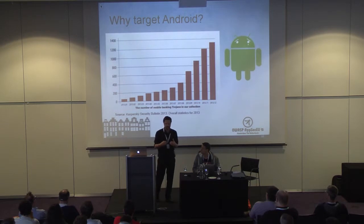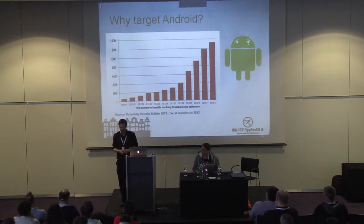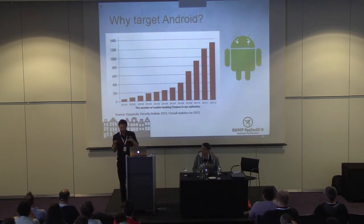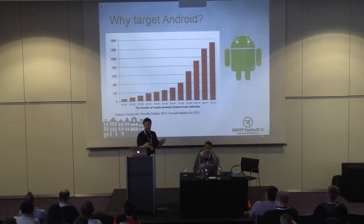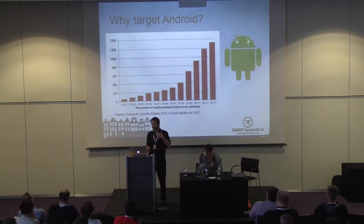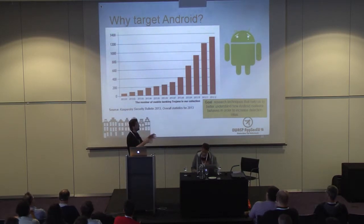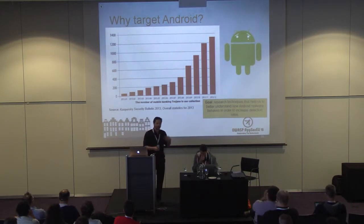Sophos Labs confirms this — there's a huge spike in the number of Android malware samples. This graph goes up to January 2014 and shows a rapid increase. What we focus on within Inviso is really the financials, mainly in Belgium. We see a rapid increase in malware samples targeting the banking sector, and that's exactly where we'd like to focus.